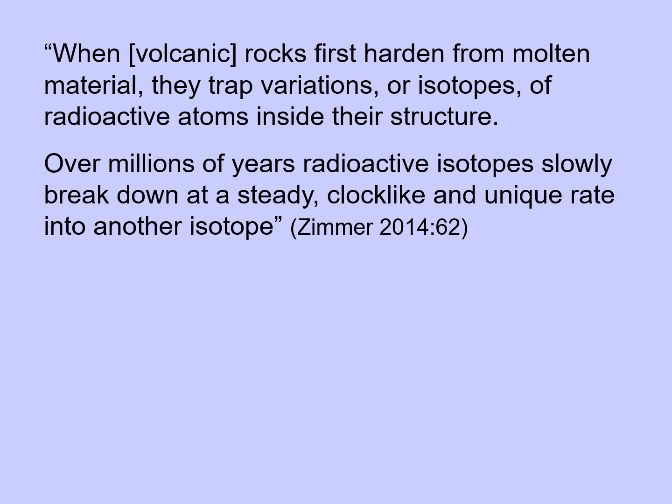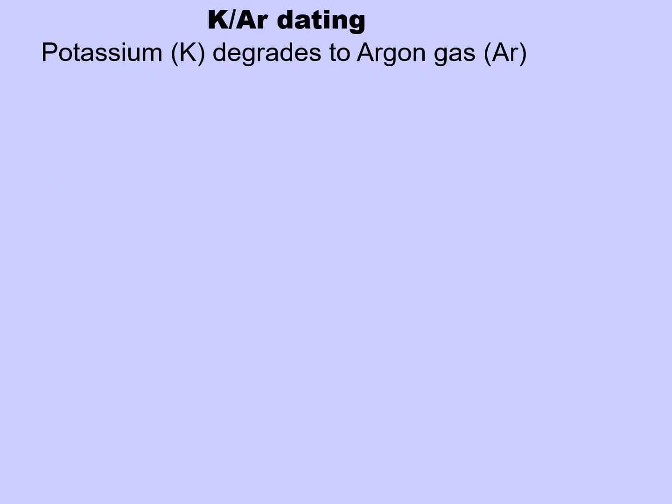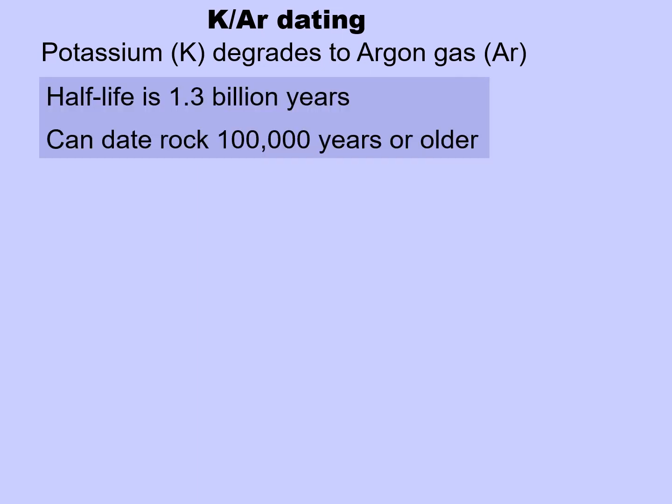When volcanic rocks first harden from molten material, they trap variations or isotopes of radioactive atoms in their structure. Over millions of years, the radioactive isotopes slowly break down at a steady, clock-like, and unique rate into a different isotope. That rate is stated as a half-life, which refers to how many years it takes for half the material to decay so that the ratio becomes 50-50. In potassium-argon dating, potassium degrades to argon gas, and the half-life is 1.3 billion years. This technique can date rock that is 100,000 years or older.